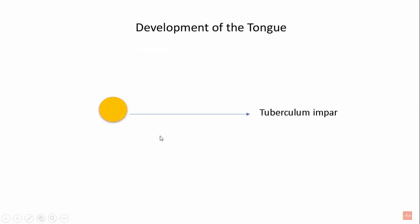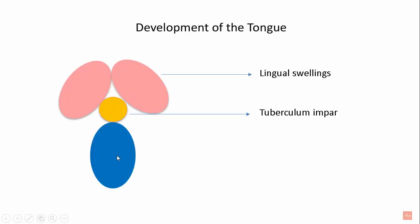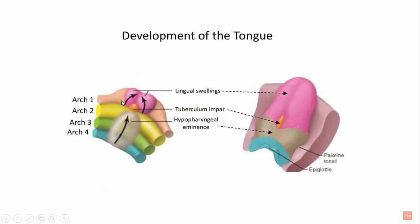In the development of the tongue, the first swelling that appears is the tuberculum impar. Then there are two swellings called the lingual swellings, and this is the hypobranchial eminence. These two lingual swellings and the tuberculum impar are in the first arch, and together they form the anterior two-thirds of the tongue. In the second, third, and fourth arch lies the hypobranchial eminence. The second and third arch form the posterior one-third of the tongue, and the most posterior part — the epiglottis — is formed by the fourth arch.